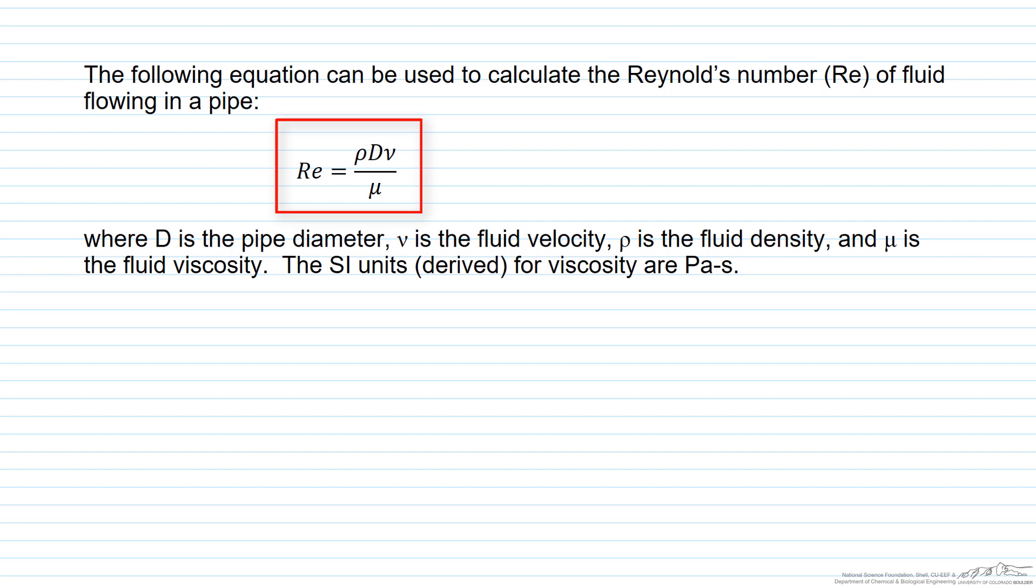Reynolds number is equal to the density, which is rho, Greek letter rho, times the diameter of the pipe times nu, which is the fluid velocity, and then we divide that product by the fluid viscosity which is mu. So we're going to just do a little bit of analysis here, dimensional analysis. The Reynolds number is unitless. So when we work with the units here we're just going to kind of verify that the Reynolds number is in fact unitless. It has no units.